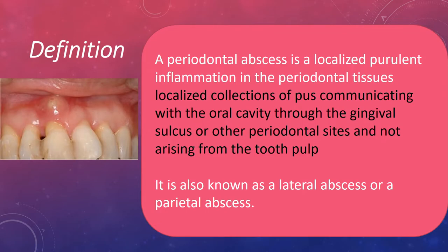Coming to the definition: what is a periodontal abscess? It is a localized purulent inflammation in the periodontal tissues. More specifically, it is a localized collection of pus communicating with the oral cavity through the gingival sulcus or other periodontal sites, and not arising from the pulp. It is also known as lateral abscess or parietal abscess, as it is situated in the lateral aspect of the root.